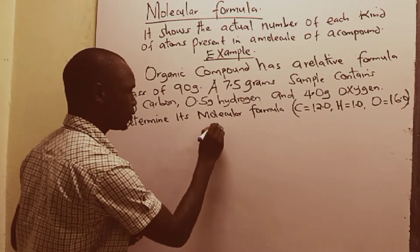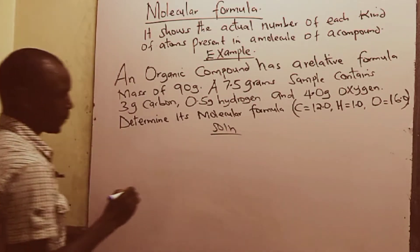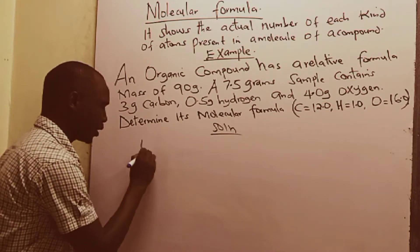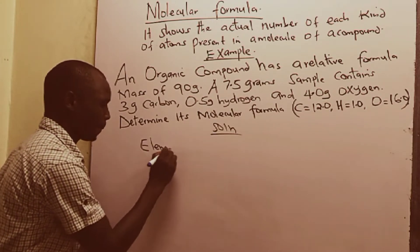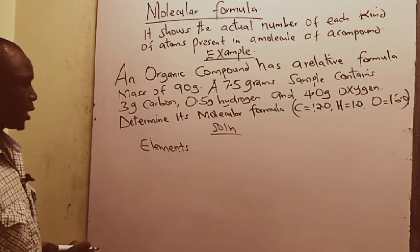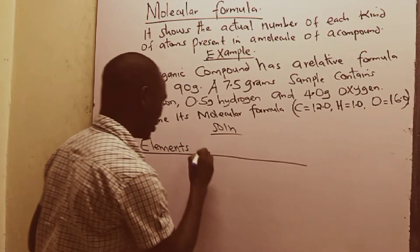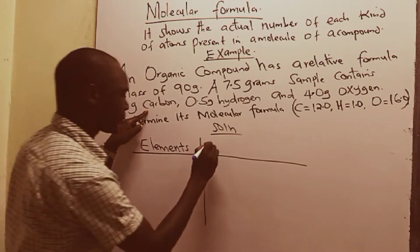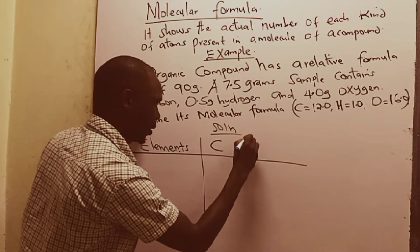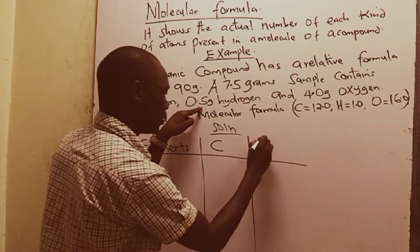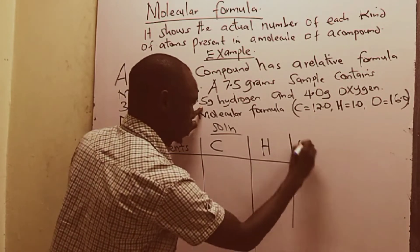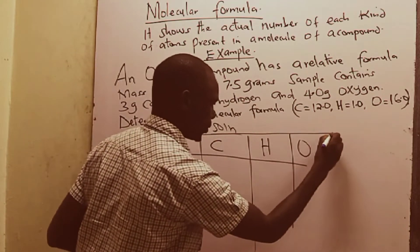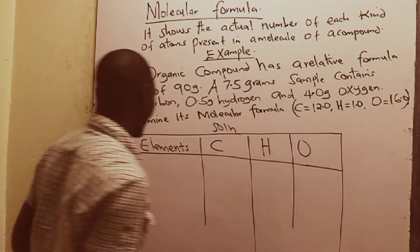Let us look at the working for this question. The working is going to be in the form of a table where we first begin by identifying the elements forming that particular compound. From the question, you realize that compound contains carbon, hydrogen, and oxygen. That is the first thing the student is supposed to do — identify the elements present.